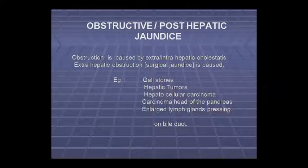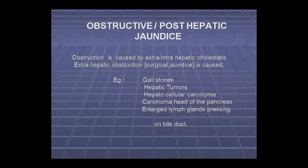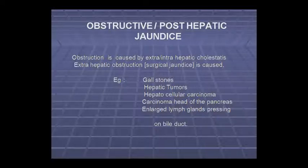Jaundice — obstructive or post-hepatic. Actually, jaundice has three types: pre-hepatic, hepatic, and post-hepatic. If there is a disturbance in the breakdown of hemoglobin in the blood, then it is called pre-hepatic jaundice or hemolytic jaundice.